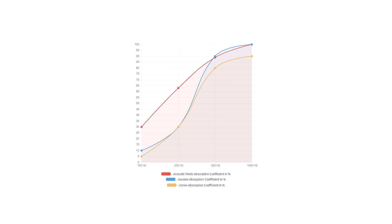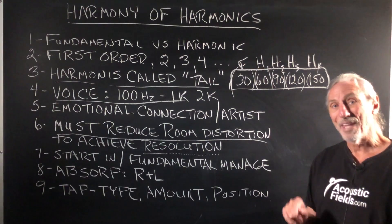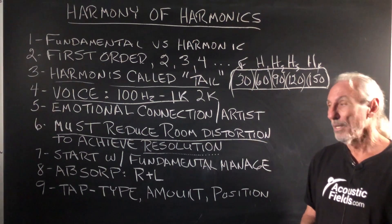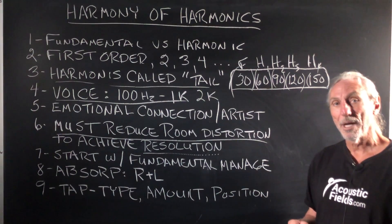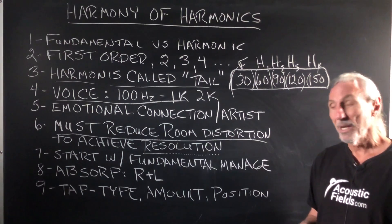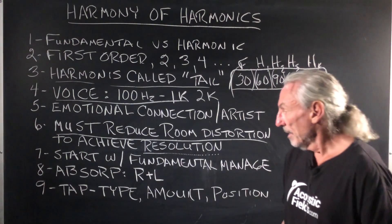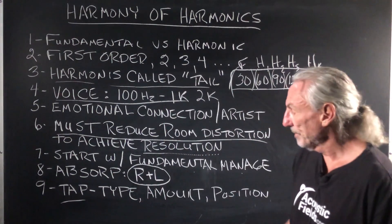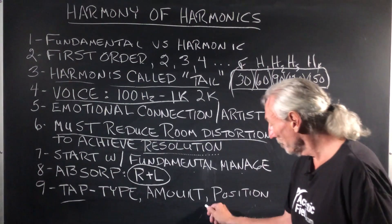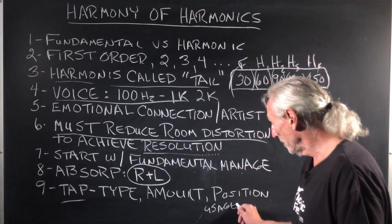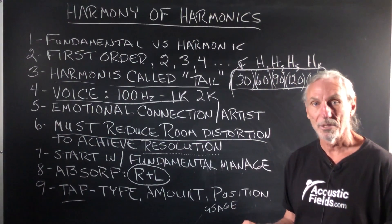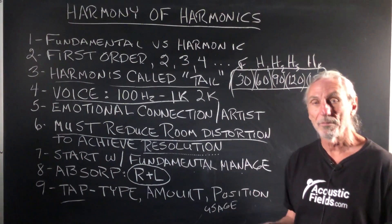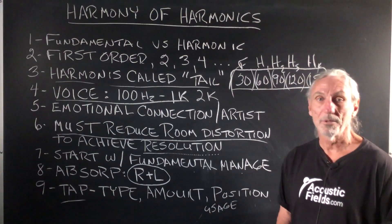You can see here in this graphic our foam technology — the smooth foam curves. That's what took me eight years and a couple million dollars to figure out. That curve took 12 prototypes. It's unbelievable for music and voice. What I realized during the design phase was that the 125 to 500 Hz range is critical. We have to manage the fundamental at the right rate and level, using the right type, amount, and position of treatment — and this is also usage dependent, because different usages require different treatment amounts and positions. Absorption and diffusion are really our two types.